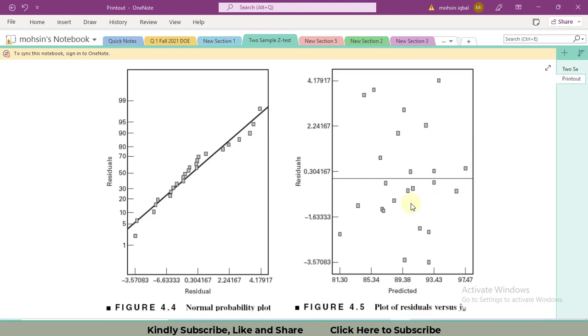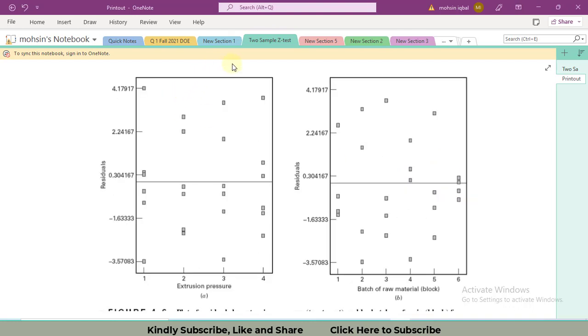The third and last assumption is equality of variances. We can see we have four different levels of extrusion pressure. The least residual value is minus 3.57 and the maximum is 4.17.